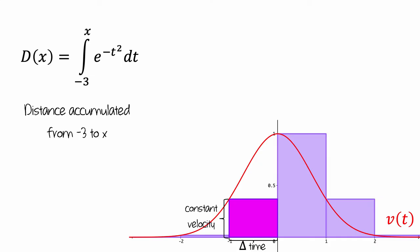And when we multiply the constant velocity by the amount of change in time, we get the amount of change in distance, which is represented by the area of the bar.